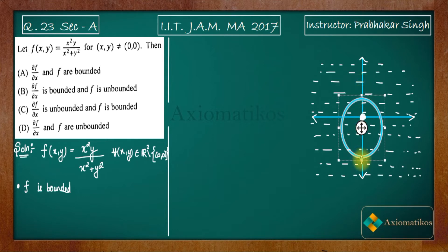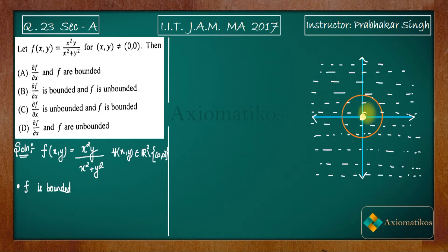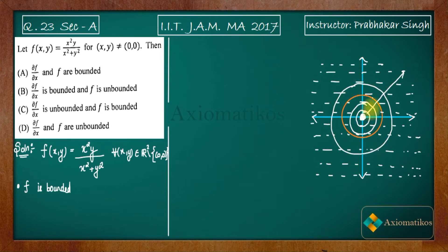In order to consider all points, let us say this is a circle of radius r. We want to consider all the points from the domain. So what I will do is increase the radius. On the circle we have infinitely many points, so if I increase the radius from zero to infinity, this circle will grow bigger and bigger.